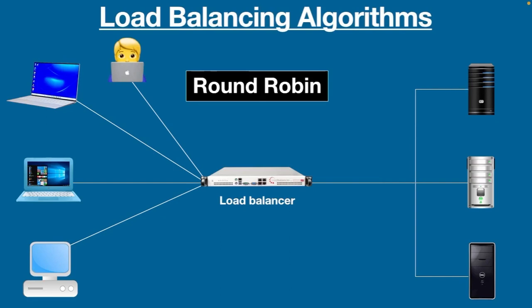Because it's the last server in the group, when the next request comes from a different user, the load balancer sends it back to the first server and it continues in the same fashion. The drawback of this method is it doesn't take into account the load already on a server. Because of this, there could be a danger that a server may receive a lot of requests and become overloaded.